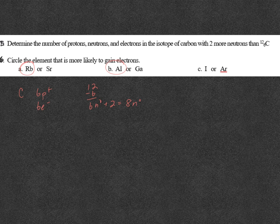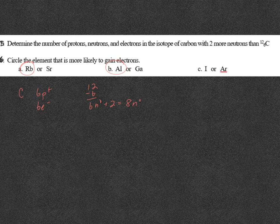Iodine or argon, argon is a noble gas. It is not going to want to gain electrons at all. Iodine ends with P5 because it's in group 17. Therefore, iodine will gain one electron and become just like a noble gas.